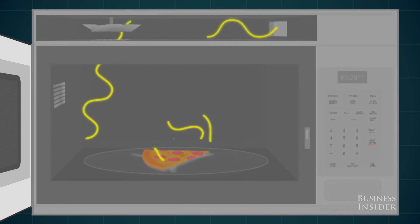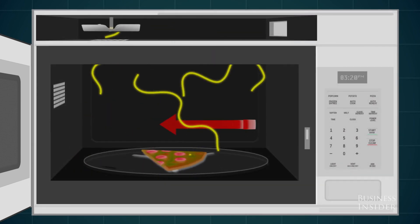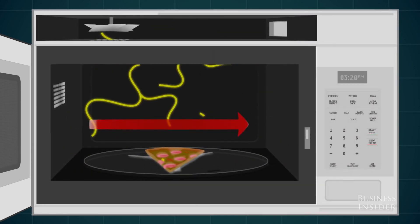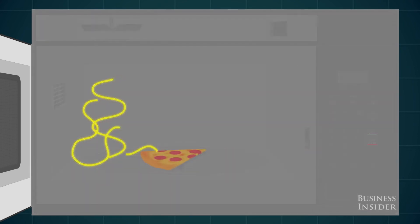But the shape of the waves can cause certain spots to be hotter than others, so the food plate spins to give each piece of food some time in the hot areas.